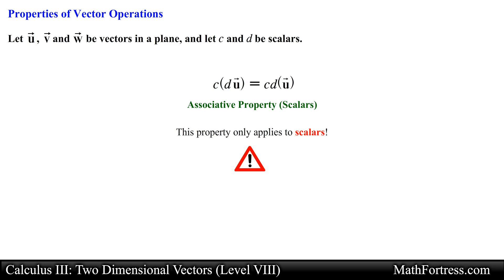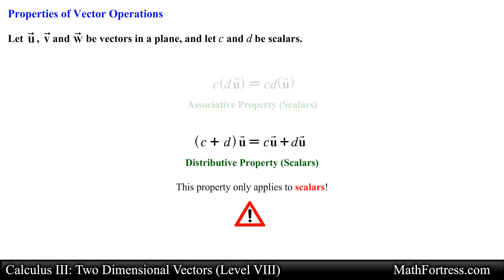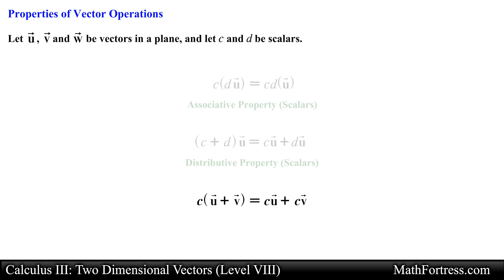Do not confuse scalar multiplication with vector multiplication, which is a totally different concept. The next property is: the scalar quantity c plus d times vector u is equal to scalar c times vector u plus scalar d times vector u. In this property the vector is following the distributive property of real numbers — notice that this property is applied to scalar quantities. Similarly, scalar c times the sum of vector u and v is equal to scalar c times vector u plus scalar c times vector v. This is another form of the distributive property for scalars, where the scalar is distributed to each of the vectors.